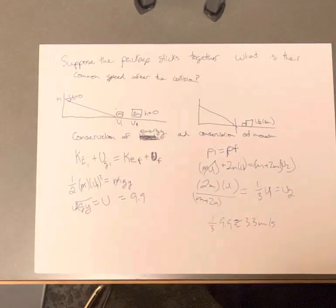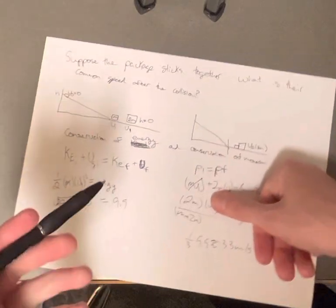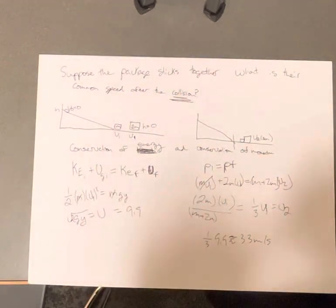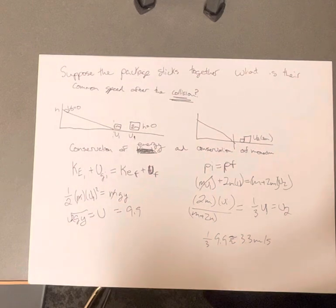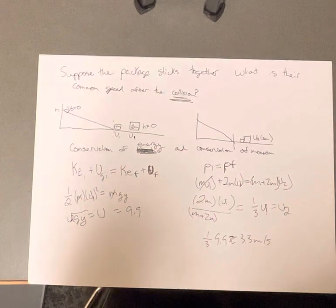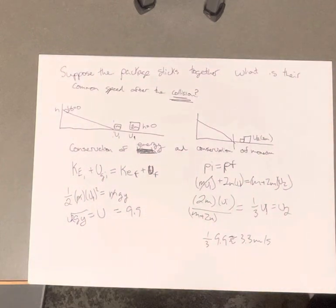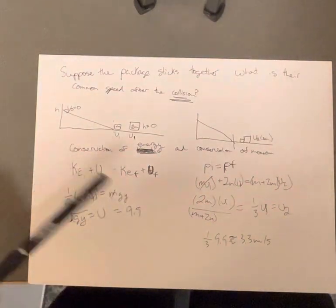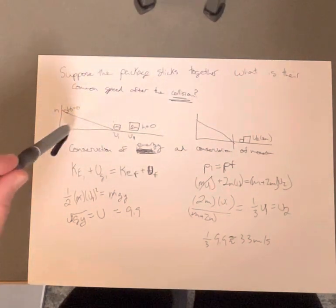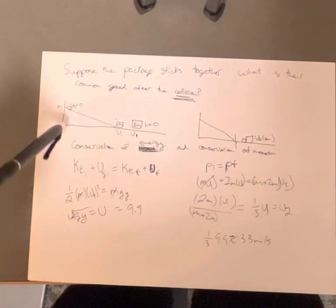Suppose the packages stick together — what is their common speed after the collision? So this involves a collision, and we're going to use conservation of momentum. But we want to find the speed, so we're trying to find velocity. It's good to note that you can't actually solve it without finding the initial velocity of M first.